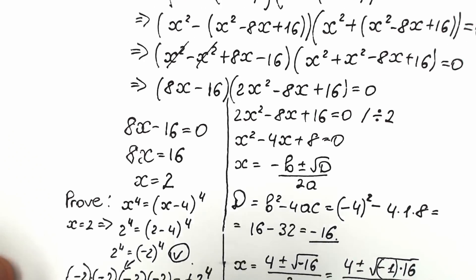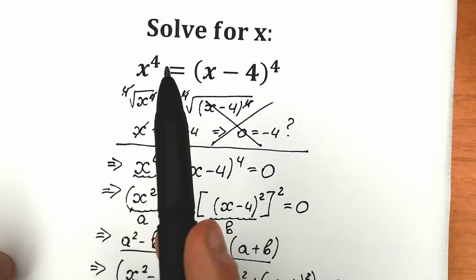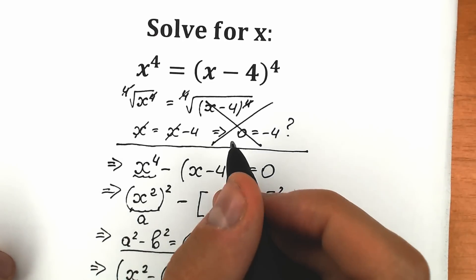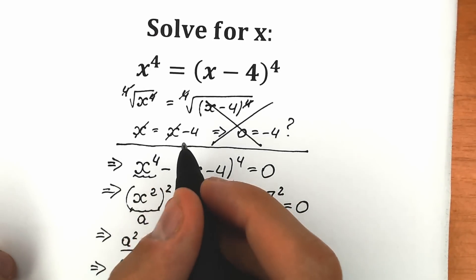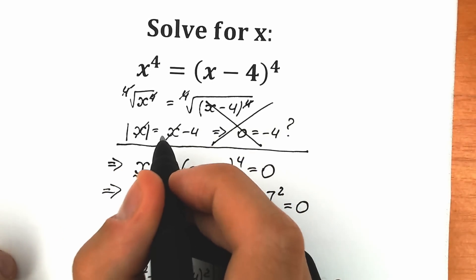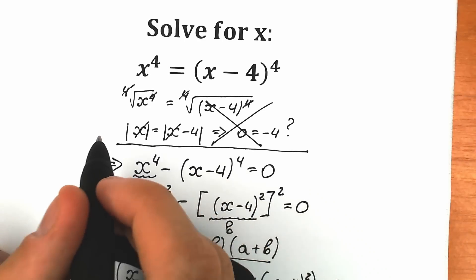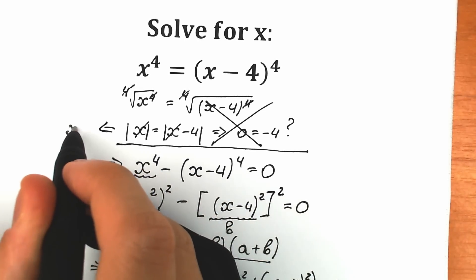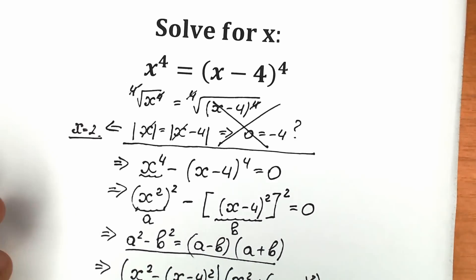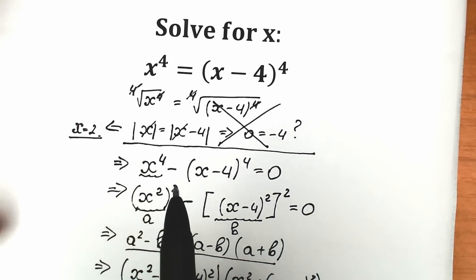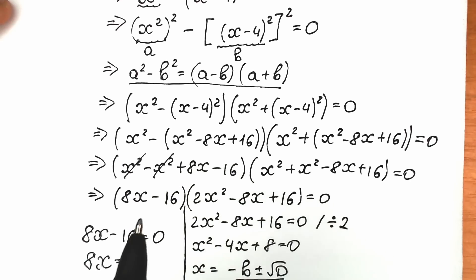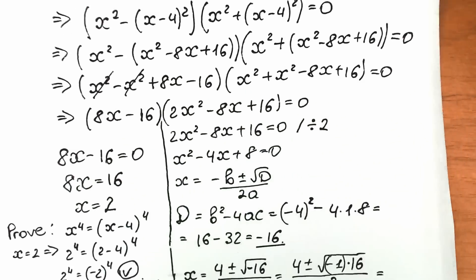Don't forget about the common mistake of canceling the fours, which gives x equals x minus 4. You can actually solve the challenge that way if you put absolute value signs correctly — with absolute values you can find that x equals 2. But in our case, it's better to solve it this way: we showed a full solution with factoring and found three roots.